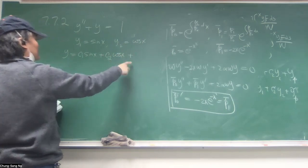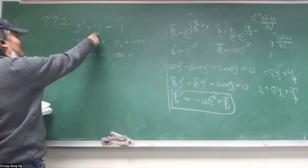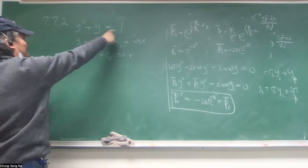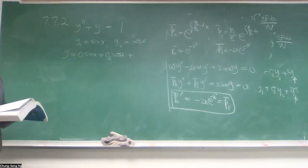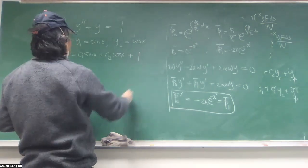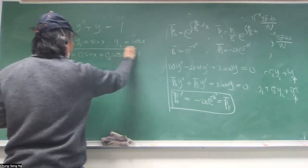And then you need a particular solution. And what I've said is y equals 1 is an obvious particular solution because that one equals one, and one double prime is zero. This is a constant.